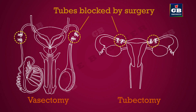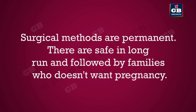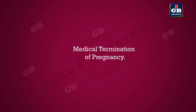Surgical methods are permanent. They are safe in the long run and are followed by families who do not want pregnancy. But what happens if contraceptives fail and an unwanted pregnancy occurs? Pregnancy can be removed by medical surgery — this is called medical termination of pregnancy.